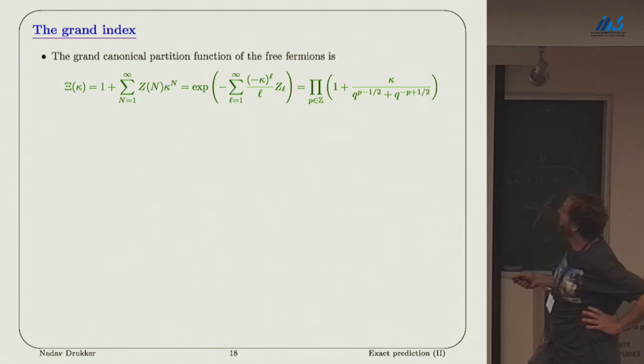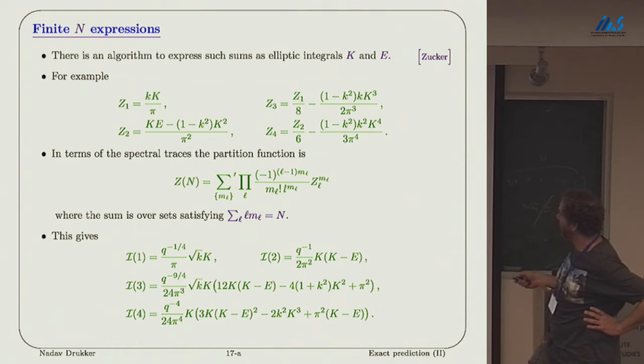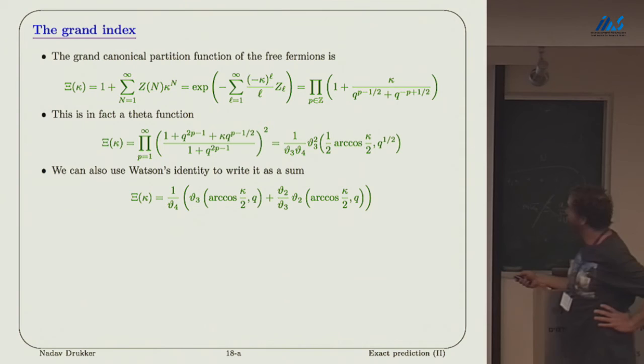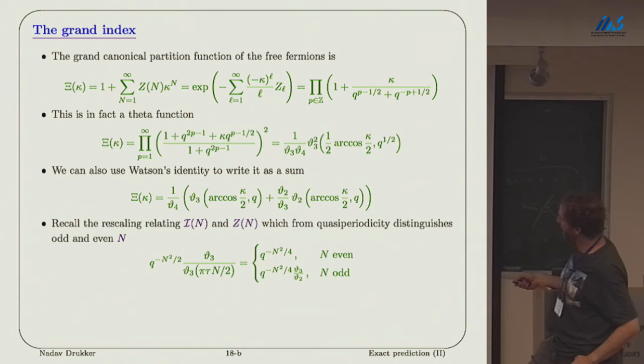You can introduce a chemical potential for N and get a grand partition function. As Nikita knows, this combinatorics goes away, and instead you get just this exponential factor, which looks very much like a logarithm, if only Z_L was the power of L, which it is, except for this sum over P, which becomes a product over P. We have a product over P of this thing, which turns out to be an elliptic function, a very simple traditional elliptic function.